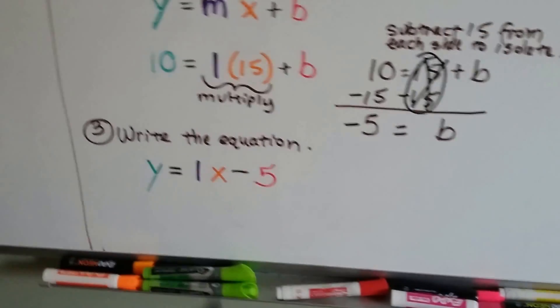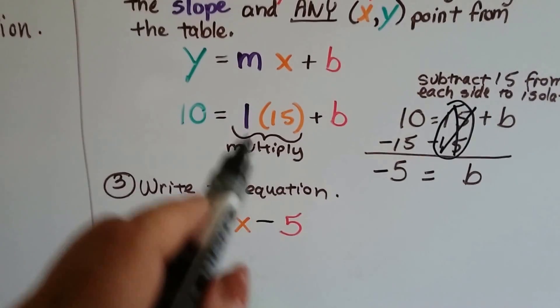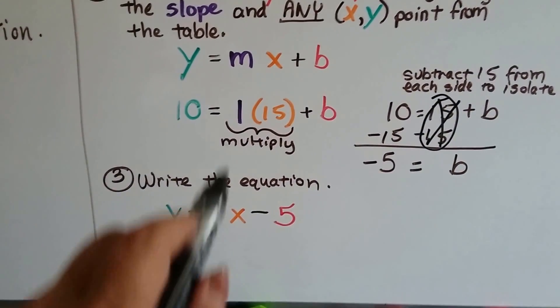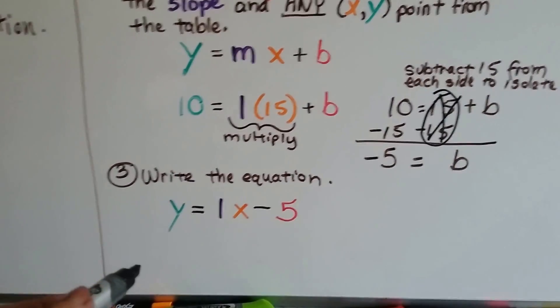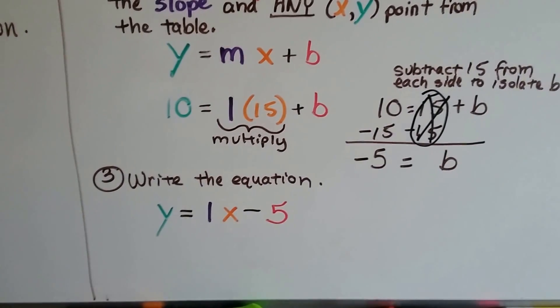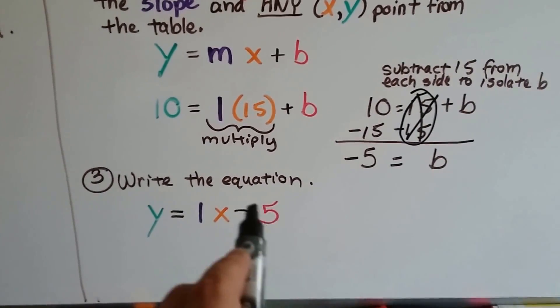Now, I put that in the place for b. I put the 1, which is our slope, in the place of the purple m. And our equation is y equals 1x minus 5. Because we figured out that the b was a minus 5. All right, let's do it one more time.